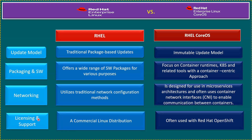On licensing and support: RHEL is a commercial Linux distribution requiring a subscription for updates and support from Red Hat. CoreOS is often used with the Red Hat OpenShift Container Platform and is available as part of specific subscription packages for containerized environments. CoreOS comes included with any of the three OpenShift subscription levels: OpenShift Kubernetes Engine, OpenShift Container Platform, or OpenShift Platform Plus. Red Hat offers CoreOS as part of all three of these subscriptions.